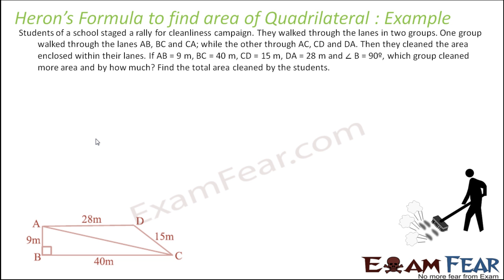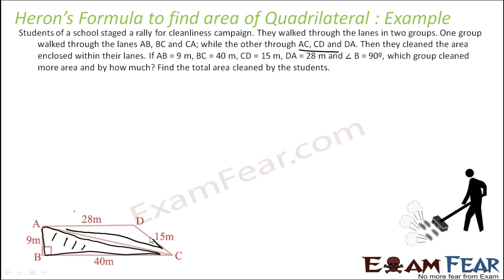Students of a school staged a rally for a clean neighborhood campaign. They walked through lanes in two groups to clean the whole area. One group walked lane AB, BC, and CA. The other group walked through AC, CD, and DA. The dimensions given are: AB = 9, BC = 40, CD = 15, DA = 28, and angle B = 90 degrees.